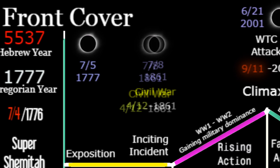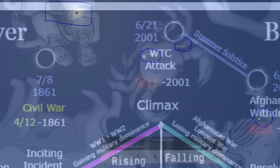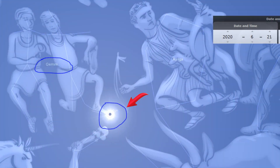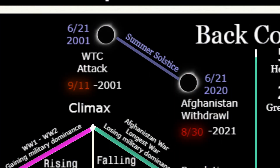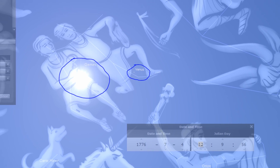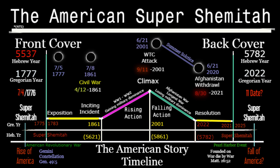There was an annular eclipse on 7/8 of 1861, the year of the Civil War. Then one on 6/21 of 2001, marking the World Trade Center attack. Then another on 6/21 of 2020, correlating with the Afghanistan withdrawal. Both 6/21 eclipses land on the summer solstice — a unique characteristic — tying the World Trade Center attack to the Afghanistan withdrawal. The point of this exercise was simply to demonstrate that the constellation of Gemini is tied to America.